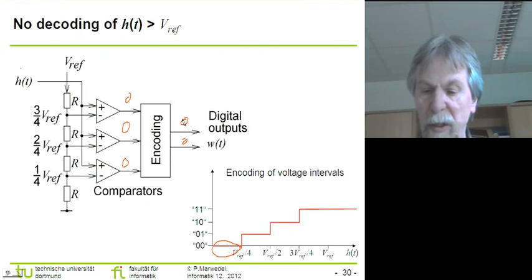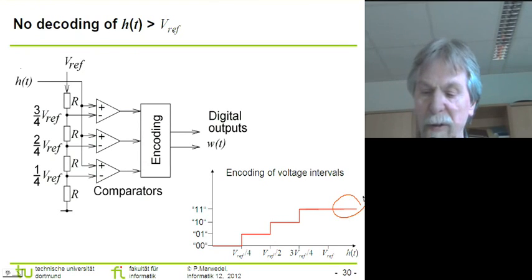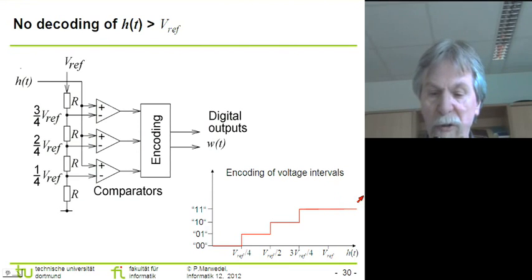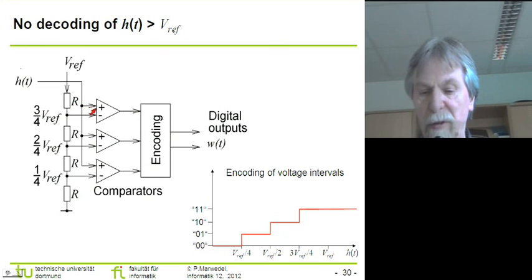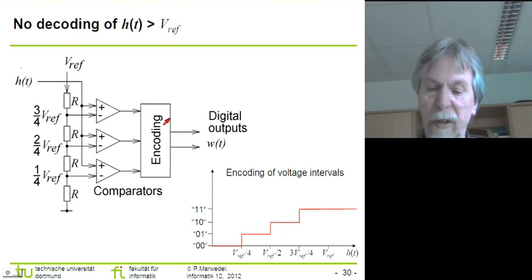Finally, we consider the last case where the input voltage is somewhere in the lowest interval. As a result, all comparators would generate zeros, and we generate the smallest digital value at the output. If the input voltage exceeds the reference voltage, in this simple design we don't have a special output code for that — we would just generate the largest digital value. We have a design which seems to be pretty fast because we don't need any clock.